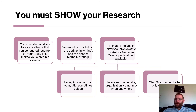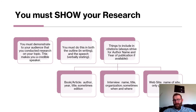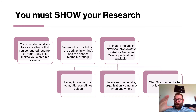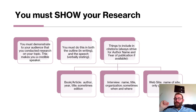You need to show your research. You need to demonstrate to your audience that you've conducted research by including in-text citations in the outline. I need to see the authors, names, years, and titles. All you really need is the author's name and the year — 'According to Smith 2012,' 'According to Johnson 2013,' 'According to Brown 2011.' I need to see that in the outline, and I need to hear it when you're speaking.